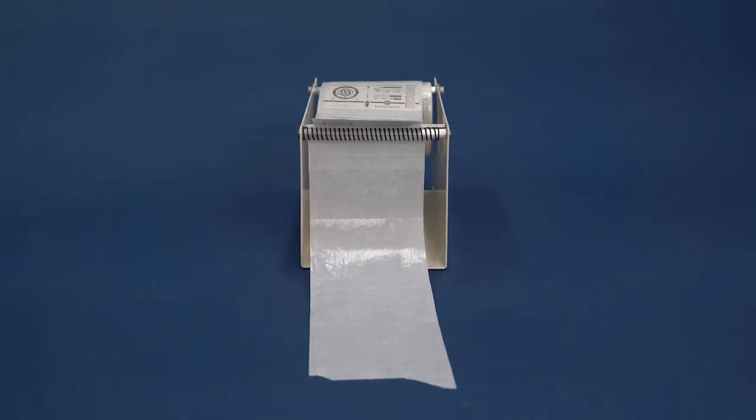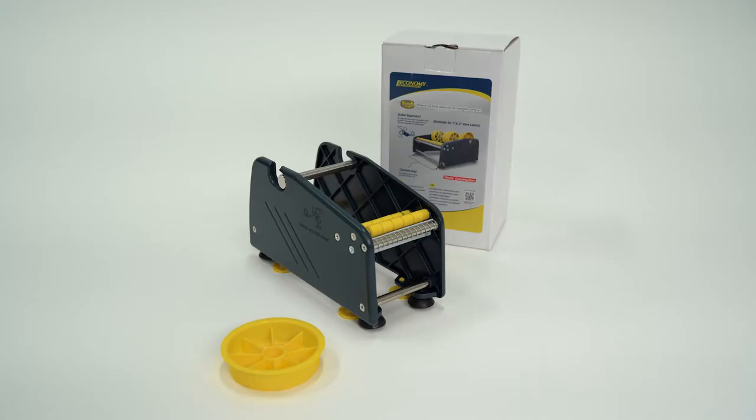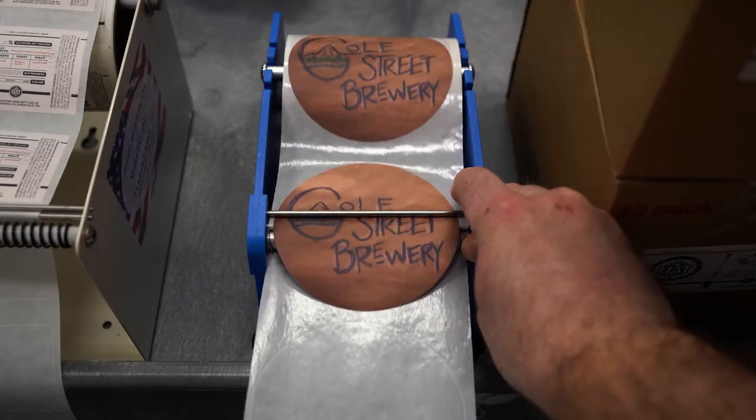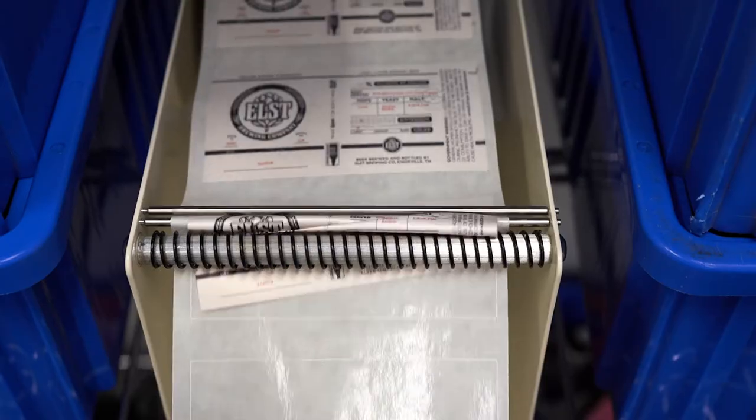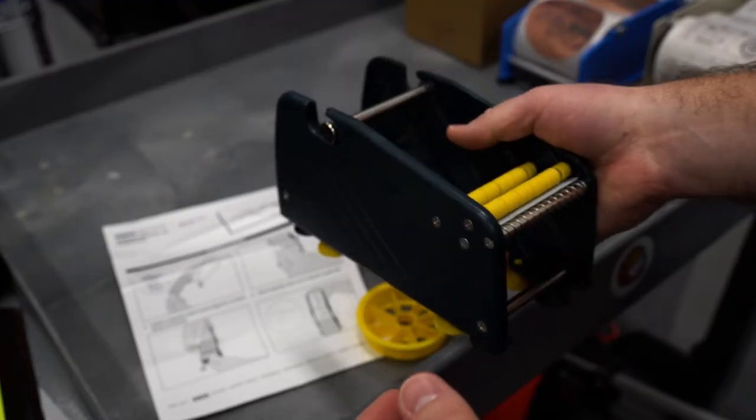Every year, millions of roll labels are dispensed using antiquated dispensers that haven't been improved in decades. These legacy dispensers are slow, clunky, expensive, and ugly.